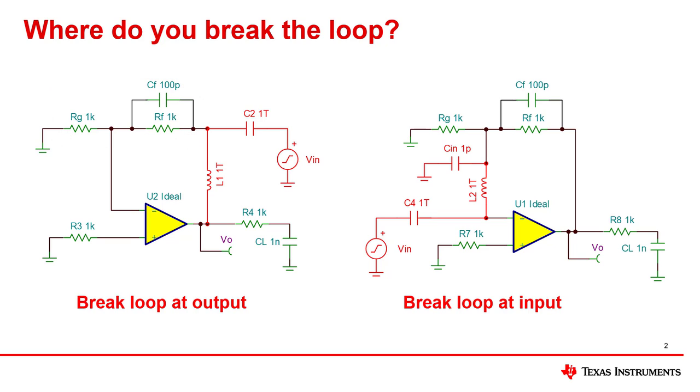The other popular method for doing stability analysis is to break the loop at the input. In this case, the amplifier input is disconnected from the feedback network with the same test circuit.